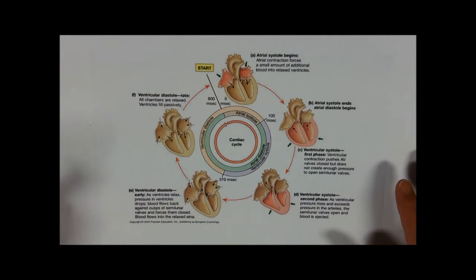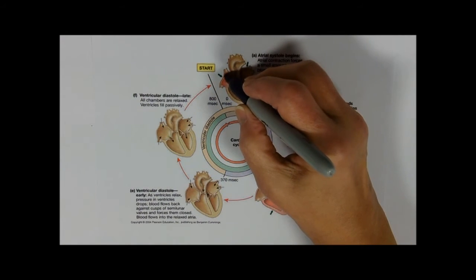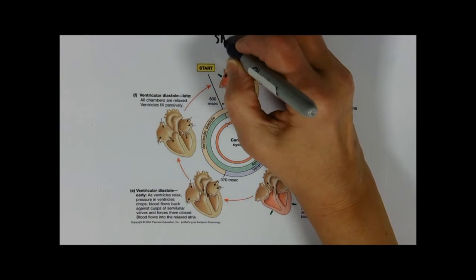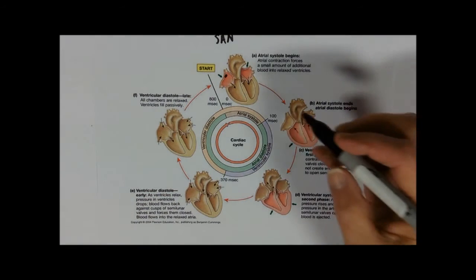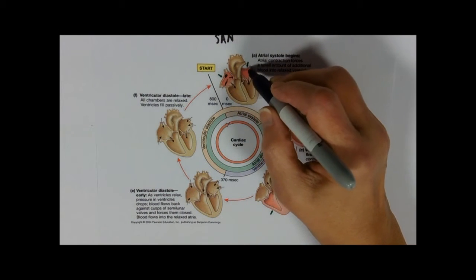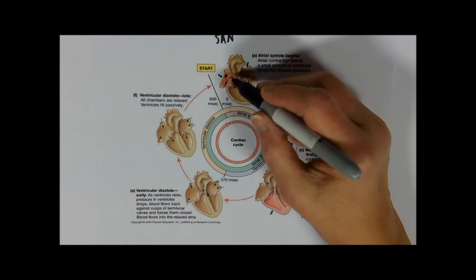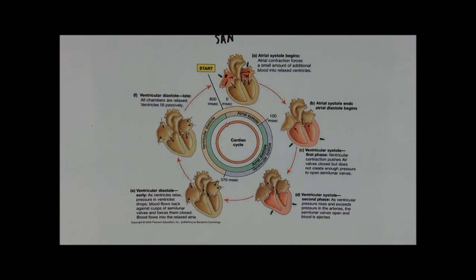The reason we start with atrial systole is that the heart's beat is controlled myogenically — that means it starts in the muscle of the heart itself. It starts from a region up in the right atrium called the SAN, or sinoatrial node, and that sends out a wave of excitation — don't call it an impulse, it's not going through a neuron — over the atria to make them contract.